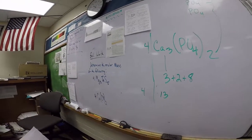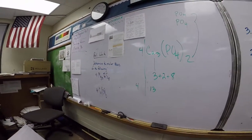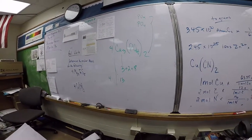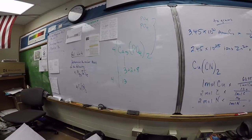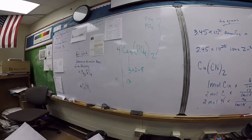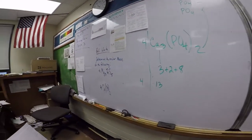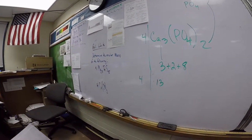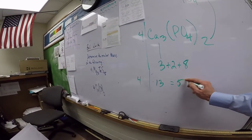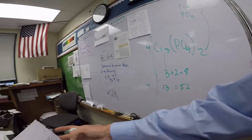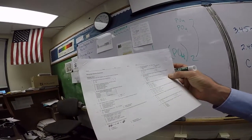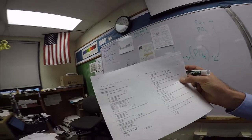Now we're going to take the four out front. Let's add all this up. We've got three plus two is five. Five plus eight is 13. So four times 13 is 52. And is that an answer on the test? Yes, it's A.